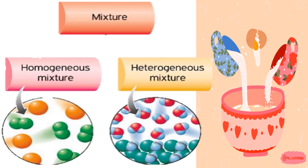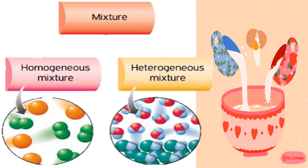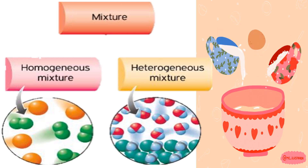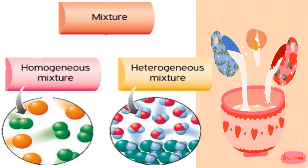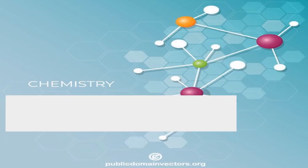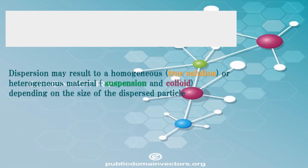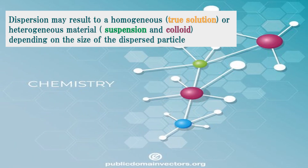In our past discussion, we have discussed that mixture is classified into homogeneous mixture and heterogeneous mixture. Mixtures may also be classified depending on their particle size. Dispersion may result to homogeneous through solution or heterogeneous material — suspension and colloid — depending on the size of the dispersed particle.